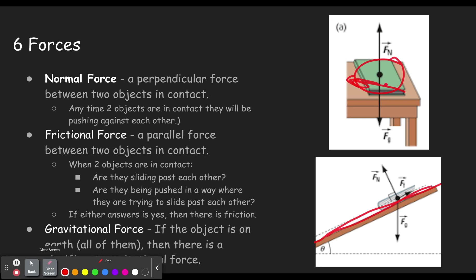or if it's on a slope, either one of those two will cause there to be a frictional force trying to resist the motion. Either the motion that's happening, or the motion that could happen because of the slope.